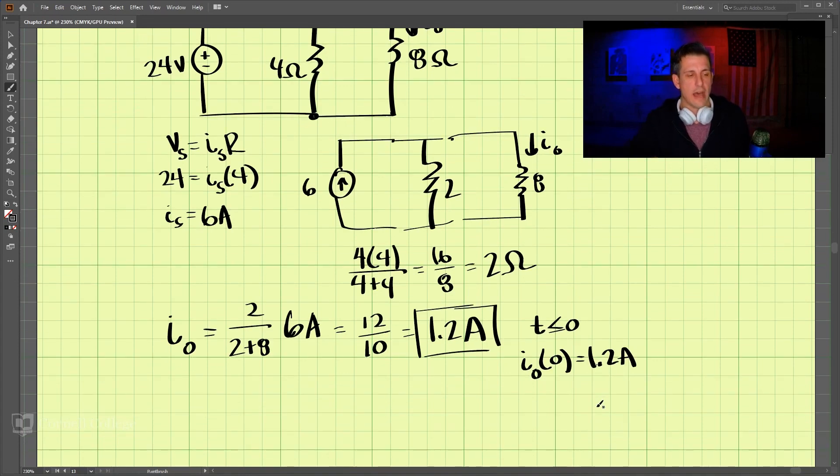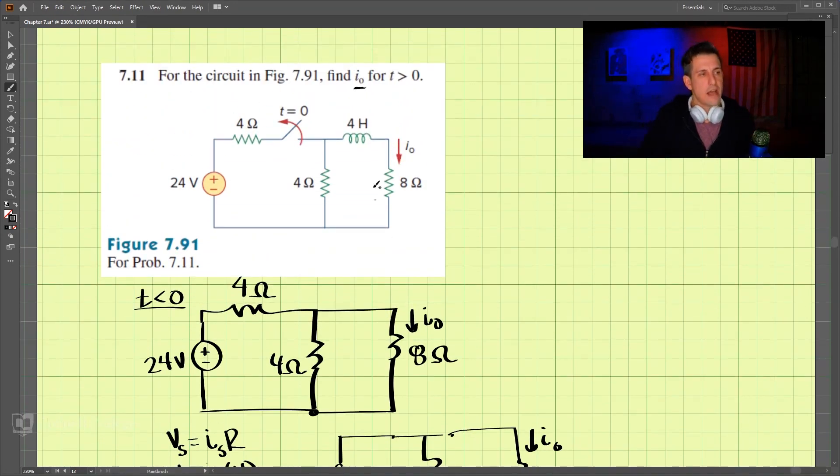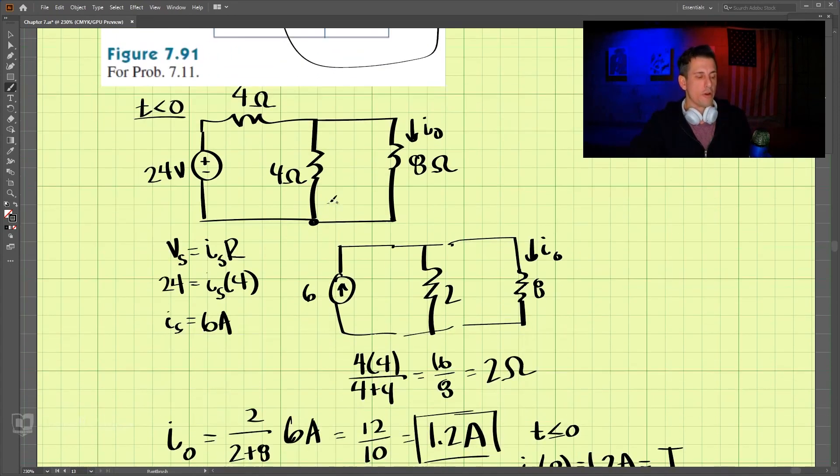So we're going to need that because that is our original I here for the circuit. Now, at time, for time greater than 0, this thing becomes open here. So what we have is just this part of the circuit over here. Let's redraw that part of the circuit.